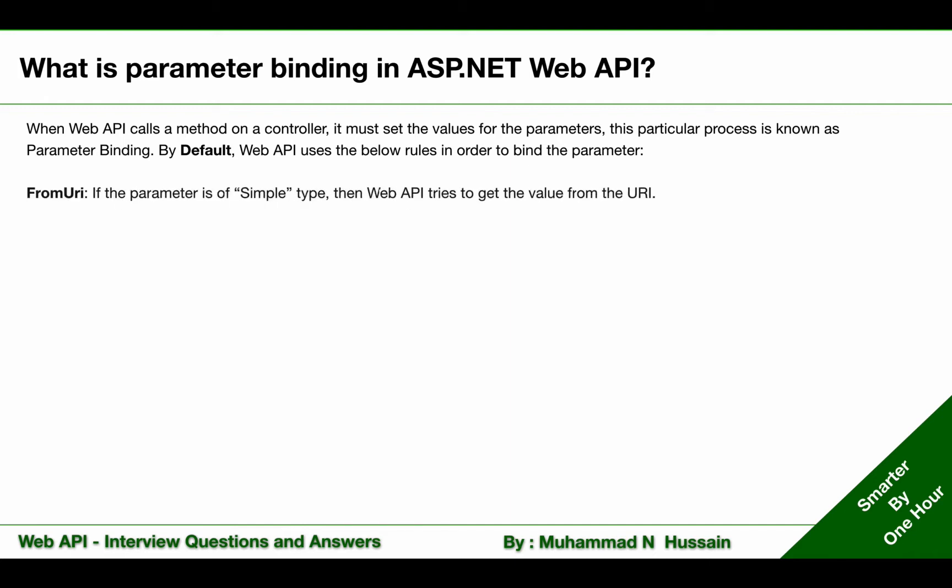The first rule is from URI. If the parameter is of simple type, then Web API tries to get the value from the URI. Here, simple type means .NET primitive types like int, double, datetime, guid, string, or any type which can be converted from the string type.